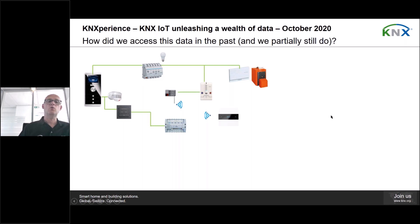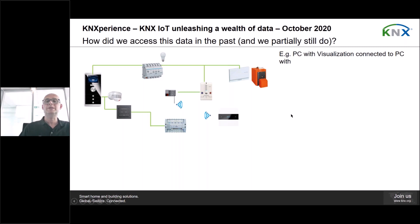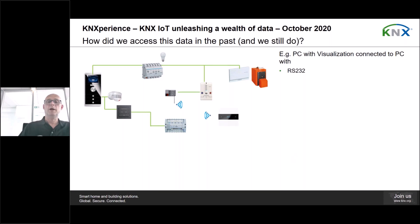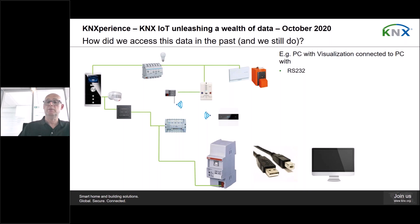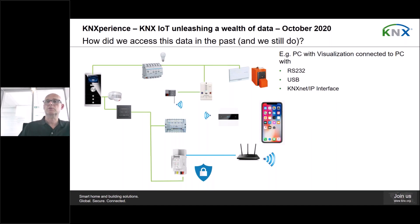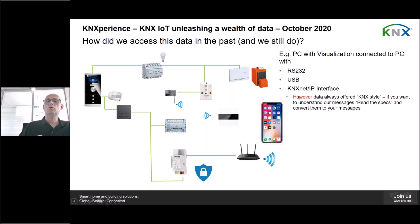Let's look at how we accessed data in the past and how we still partially do today. In the very early days, we linked a PC with visualization to the bus using RS-232. In more recent days, we could use USB. And for approximately the last 10 to 15 years, we've been able to link a KNX installation to an IP network using a KNXnet/IP interface. But for all these solutions, the data is always offered in the KNX style.